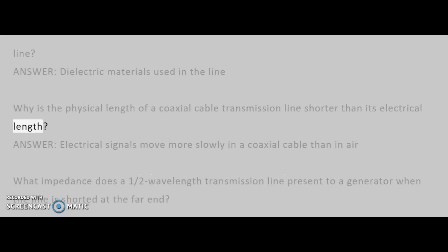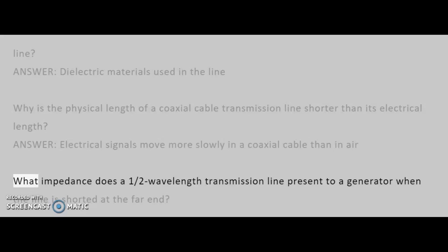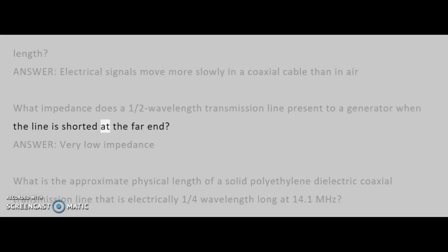Why is the physical length of a coaxial cable transmission line shorter than its electrical length? Answer: Electrical signals move more slowly in a coaxial cable than in air. What impedance does a half-wavelength transmission line present to a generator when the line is shorted at the far end? Answer: Very low impedance.